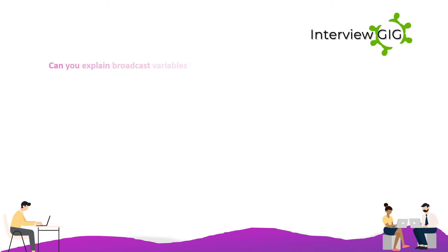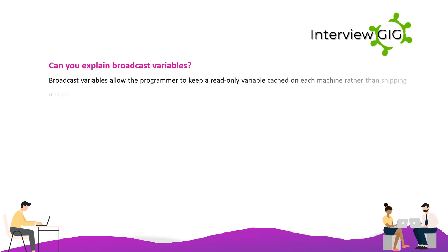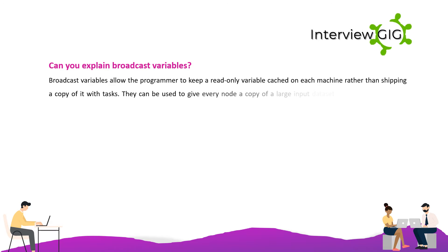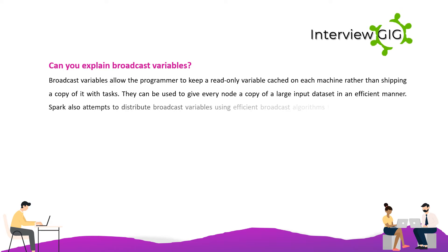Can you explain broadcast variables? Broadcast variables allow the programmer to keep a read-only variable cached on each machine rather than shipping a copy of it with tasks. They can be used to give every node a copy of a large input dataset in an efficient manner. Spark also attempts to distribute broadcast variables using efficient broadcast algorithms to reduce communication cost.